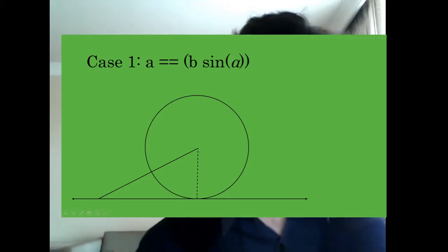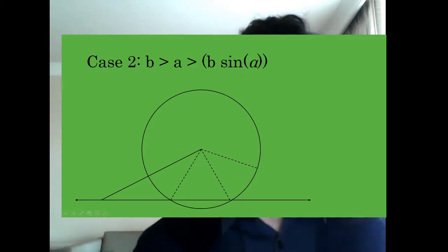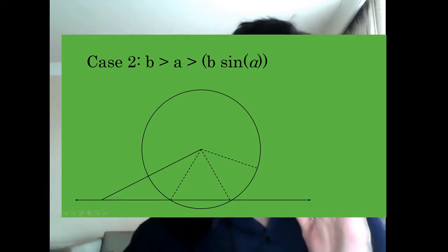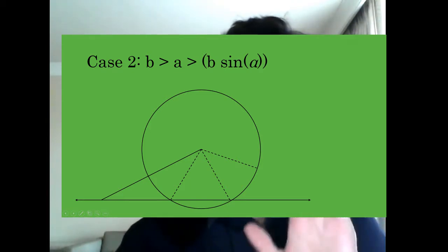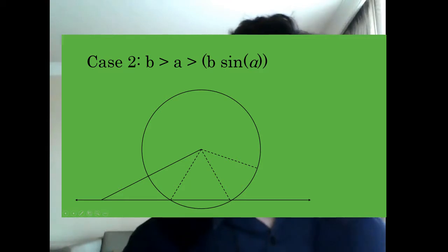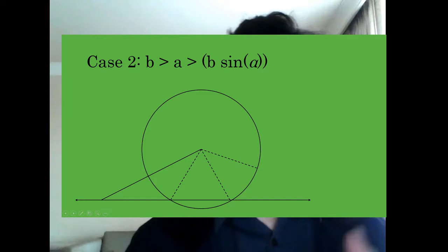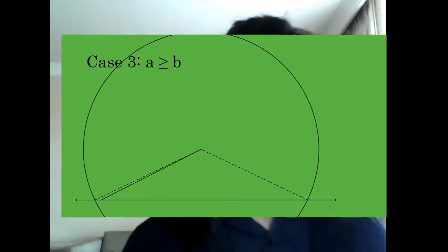And if A is greater than h — in other words, if we have a case where the opposite side length is actually greater than the length of the altitude that we just computed — then there are in fact two distinct triangles possible. One of these triangles is acute and the other is obtuse, and we'll have to figure out some data for each triangle in order to solve the problem.